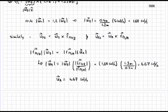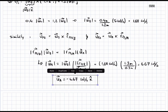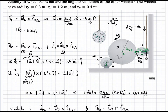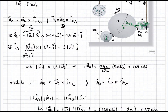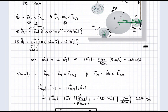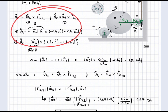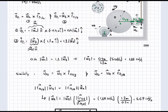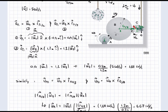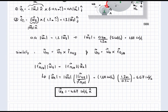Our final answer is omega a equals 6.67 radians per second in the negative k-hat direction. To recap, we derived these expressions vectorially, but this relationship always applies when we have two gears or wheels with no slipping — the velocity at the contact point is equal between the two. We can use this to jump from wheel to wheel and determine the final angular velocity.